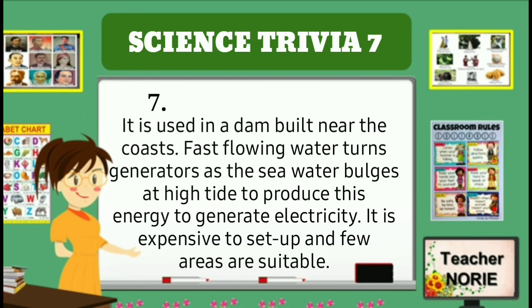It is used in a dam built near the coast. Fast flowing water turns generators as the sea water surges at high tide to produce this energy and generate electricity. It is expensive to set up and only certain areas are suitable.